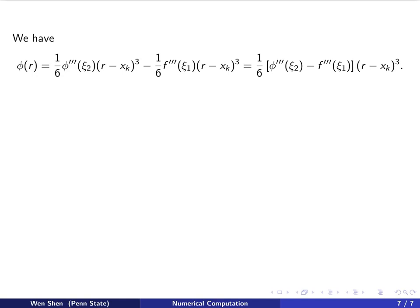Okay, so here is that written. So by subtraction, now we have φ(r) equals the subtraction of the two terms on the right-hand side. And then we also see that 1/6 and (r - xₖ) to the cube is a common factor which we take out. And then what remains in the bracket is the subtraction of these two third derivatives.